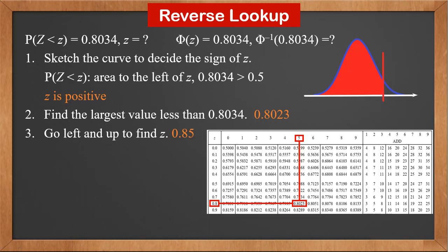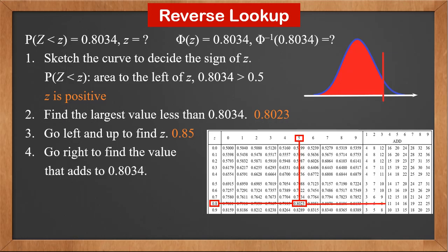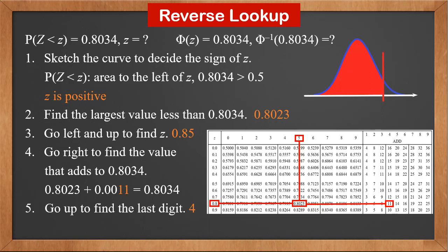We see that the probability we find in the table is 0.8023. There's still a difference of 0.0011. So, fourth, go right to find the value that adds to 0.8034. It is 11. Fifth, go up to find the last digit. It is 4. Therefore, z is 0.854, or inverse phi(0.8034) = 0.854.